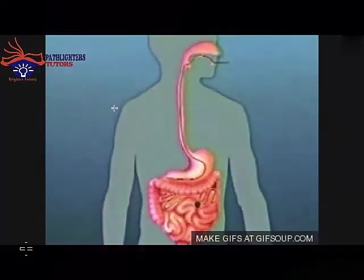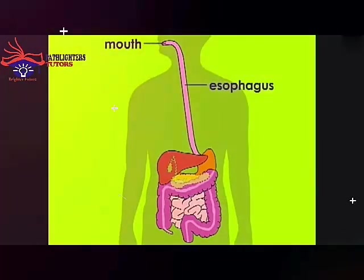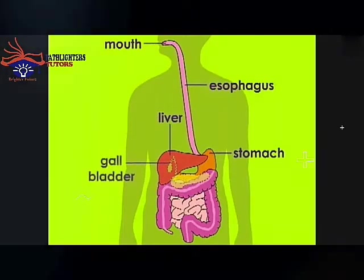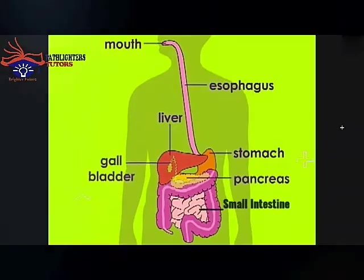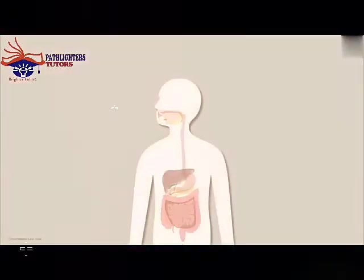The digestive system consists of the mouth, the esophagus, the liver, the stomach, the gallbladder, the pancreas, the small intestine, the large intestine, and the anus. As we can see, the digestive system is a long tube and a very complex one.